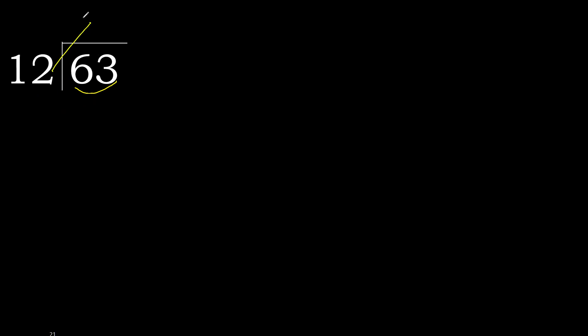With 12, multiply by which number is nearest to 63 but not greater. 12 multiplied by 6 is 72 — 72 is greater. 12 multiplied by 5 is 60 — 60 is not greater.